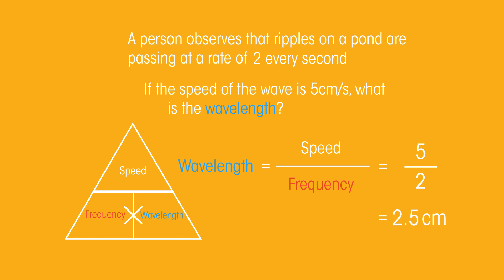Did you get it right? Did you spot that the frequency was two? Because frequency is measured per second, so if two waves are passing every second, then the frequency is two Hertz. And did you correctly have the unit as centimeters?